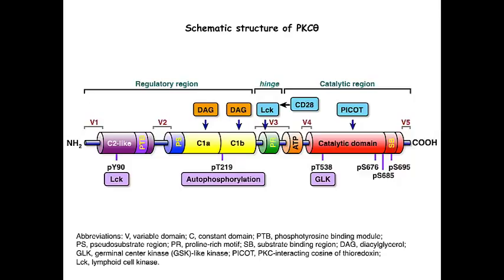Representative PKC Theta binding molecules are shown above the enzyme, and arrows point to specific domains that mediate the interaction. The conversion of PKC Theta to an active enzyme involves several steps of phosphorylation on specific residues. Kinases that are known to phosphorylate these residues on PKC Theta are also indicated by purple boxes.